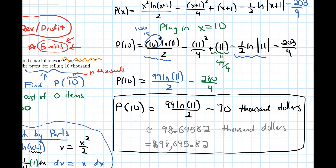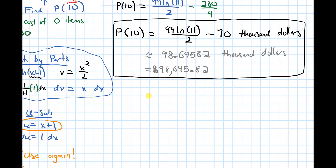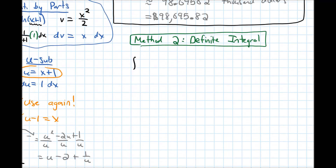I mentioned we can also solve this with a definite integral. I'll briefly sketch what that looks like without working it out fully since many steps are the same. For Method 2, we set up a definite integral from 0 to 10 of p'(x) = x·ln(x+1) dx.